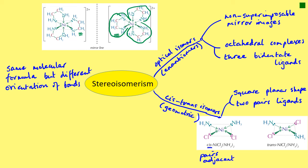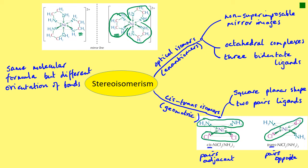You can see that the two chlorine ligands are adjacent or next to each other, as are the two ammonia ligands. The trans isomer is where the pairs are opposite — the chlorines are opposite each other, as are the ammonias. If they're opposite, they are trans; if they're adjacent, they are cis. That is cis-trans isomers, or geometric isomers.